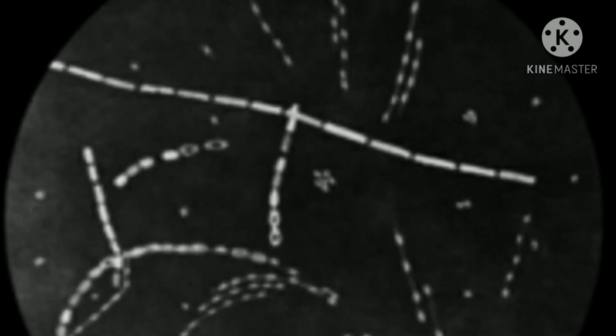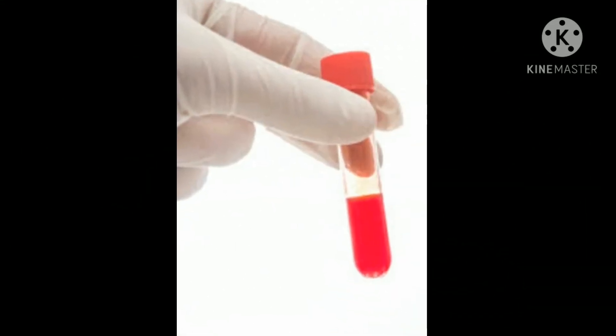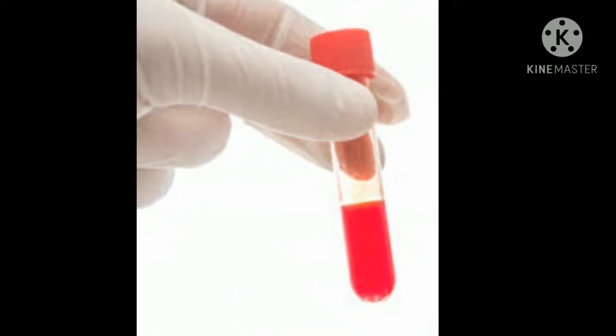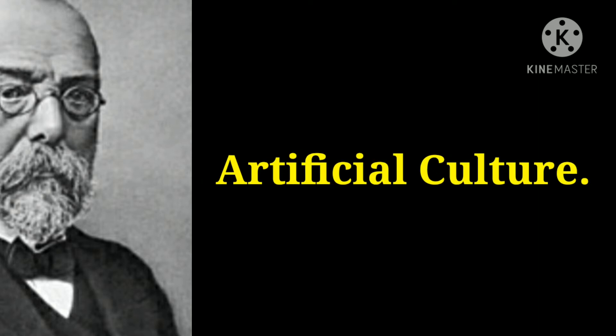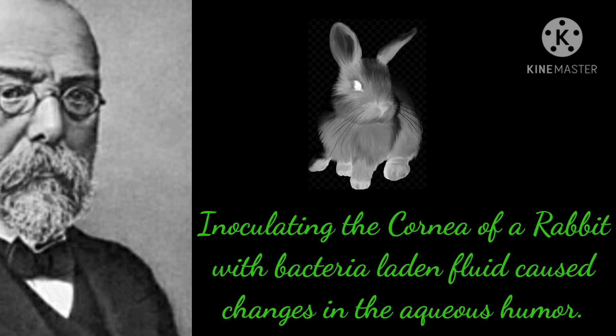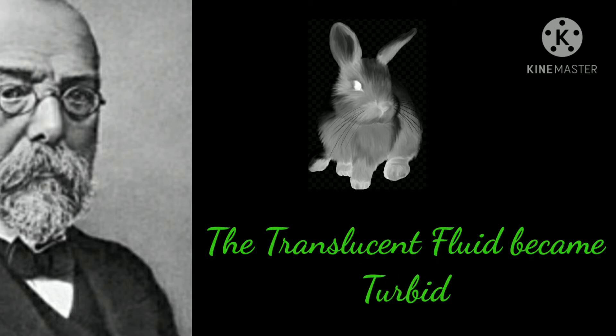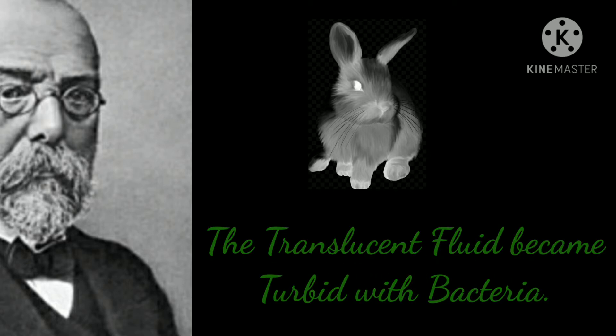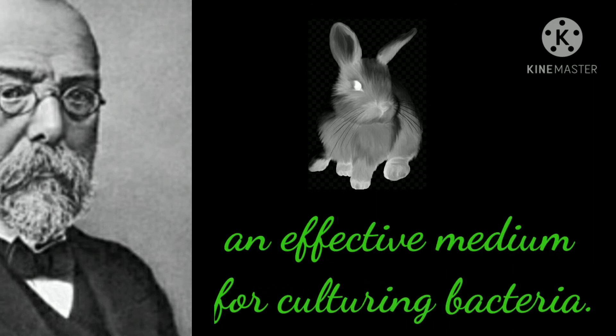The rods varied in length. Koch hypothesized that these were living bacteria. After a few days, bacteria-laden blood lost its ability to cause disease. Robert Koch developed techniques of artificial culture that allowed him to observe changes in bacteria over time. He found that inoculating the cornea of a rabbit with bacteria-laden fluid caused changes in the aqueous humor — the translucent fluid became turbid with bacteria — thus he discerned an effective medium for culturing bacteria.